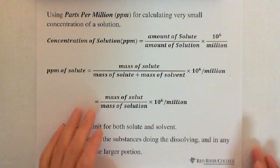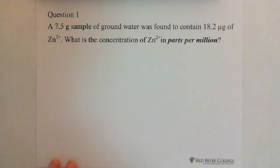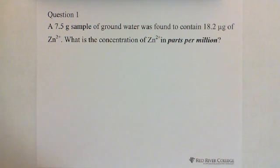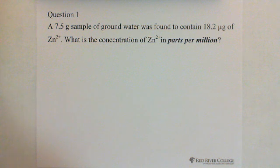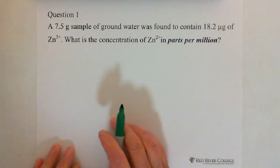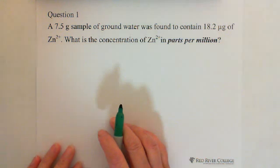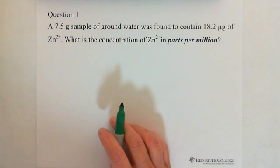Let's look at the question. Question one: a 7.5-gram sample of ground water was found to contain 18.2 micrograms of zinc ions, Zn²⁺. What is the concentration of zinc ions in parts per million? Parts per million is the unit used for very small concentrations of a solution.